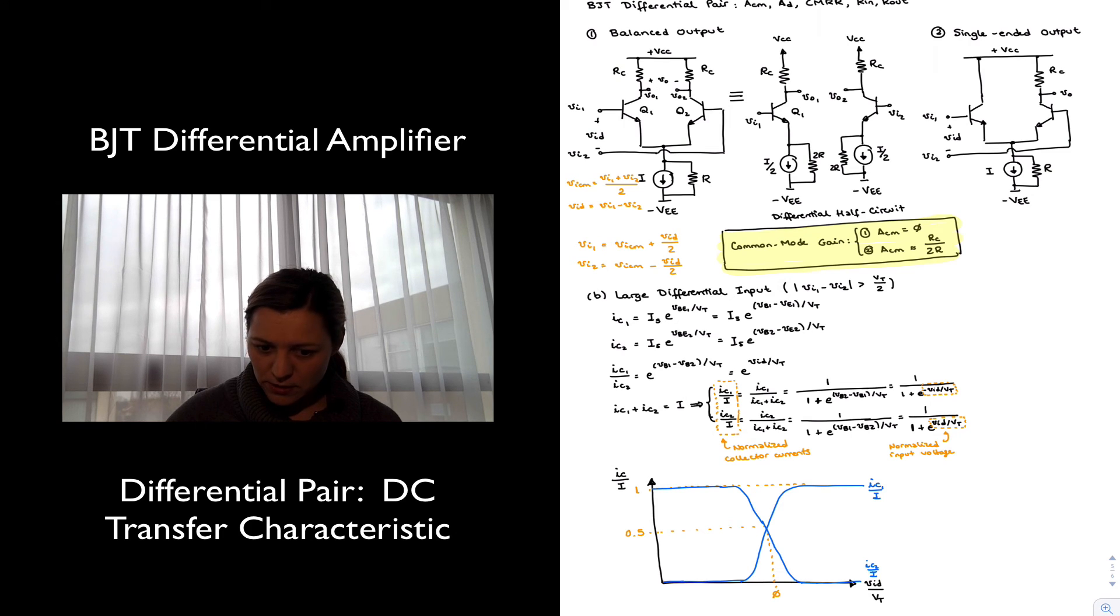And so we can see that there is a region over which there is a linear type of behavior. IC1 increases linearly as IC2 decreases linearly, and that will be the region in between these two lines that I have marked here. This is going to be minus 4 and 4. So basically 4 VID over VT and minus 4 VID over VT. And so this is what we consider to be our linear region of operation.